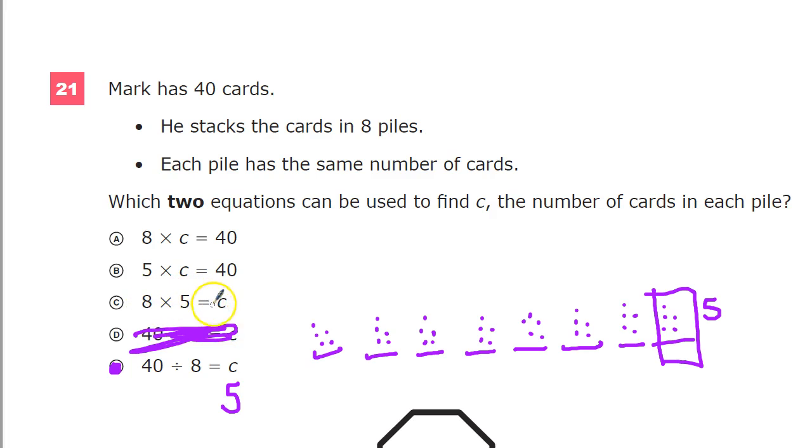Same thing here. 8 times 5 equals C. Well, we know eight times five is 40, but that's a true statement, but it doesn't answer the question. It's applying the variable to the wrong term. You want to find a situation where C's value is five, and it makes a true statement.